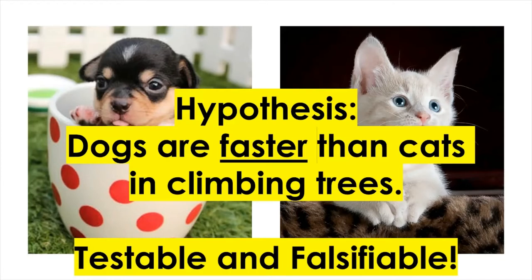Of course, there are other details you need to think about. For example, which breed will be representing each camp — should it be the beagle or poodle representing dogs, or how about Scottish fold for cats? There are other details you need to define to make this hypothesis more clear. This process of making your research hypothesis suitable for actual testing is called operationalization.